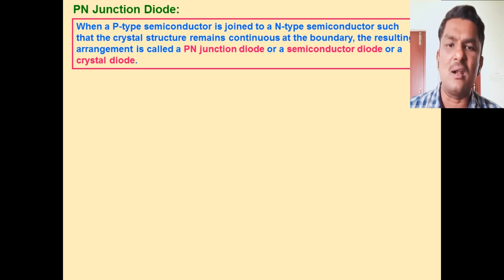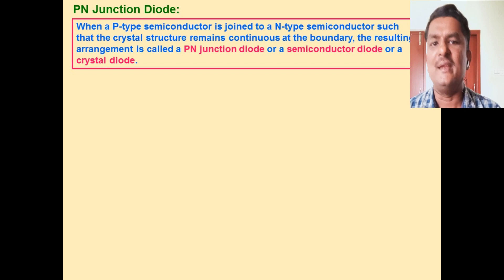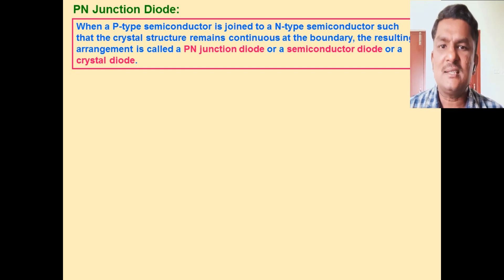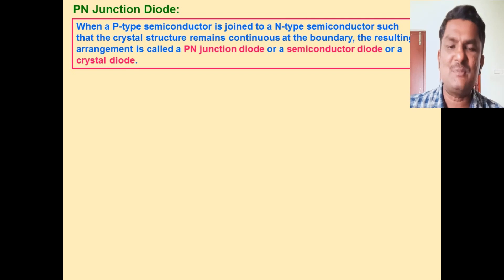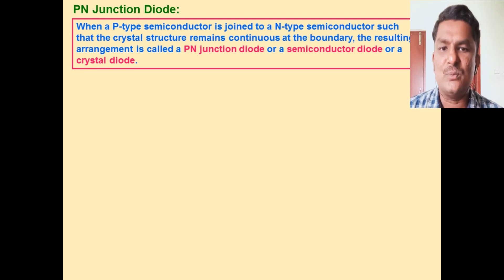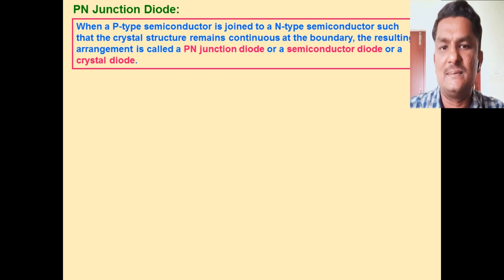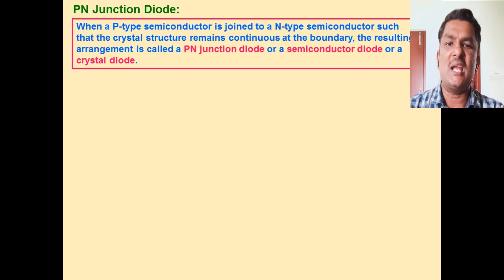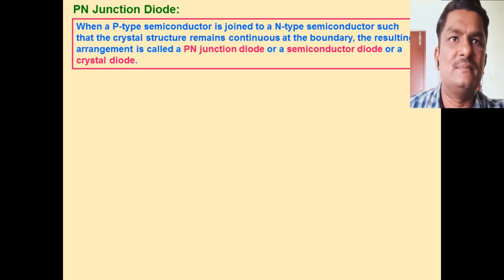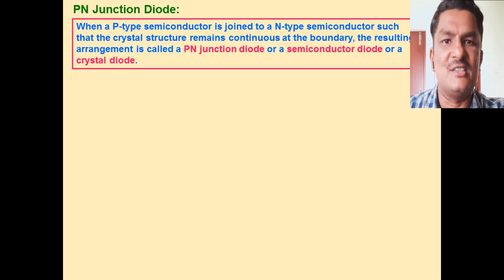The p-n junction diode is also called a crystal diode or a semiconductor diode. Scientists got the idea: what happens if p-type and n-type semiconductors are suitably joined with each other? So when a p-type semiconductor and n-type semiconductor are suitably joined with each other, a p-n junction diode can be formed.